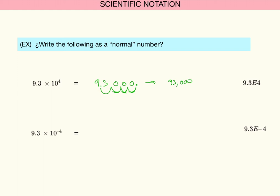Let's look at one with a negative exponent: 9.3 times 10 to the minus fourth. In this case we must move the decimal four places to the left — one, two, three, four. Never start a number with a decimal point, so the number will be 0.00093.